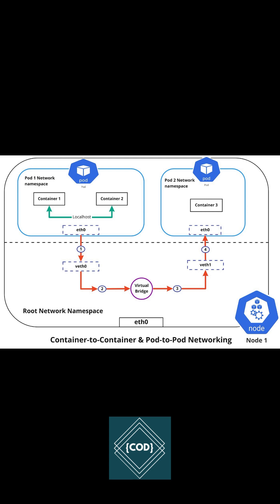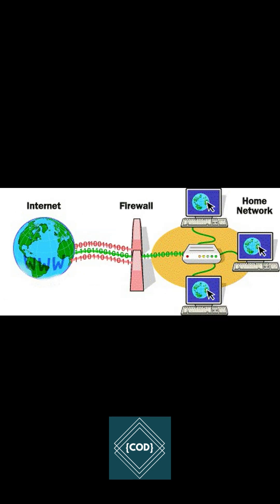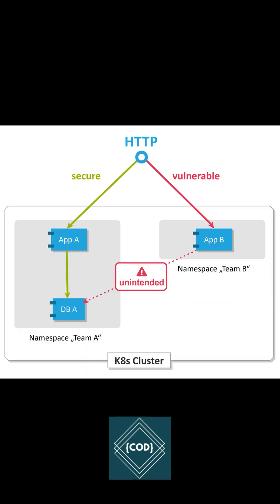A pod can communicate with three other entities: other pods, namespaces, or IP blocks. Kubernetes network policy is like a firewall in a traditional network setup. Configuring Kubernetes network policy is a simple and effective way for ensuring the network traffic flows as intended.